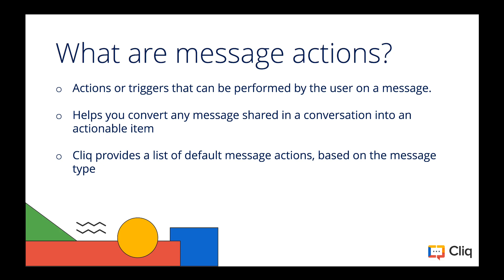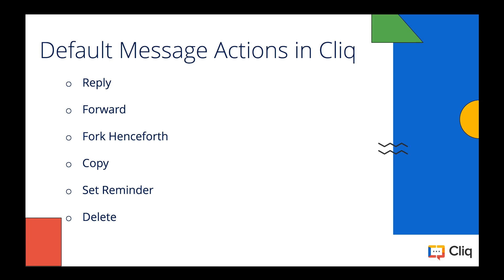So with that, let's get started. A message action in Cliq is just an action that you will perform on a message. They help in converting any messages shared in a conversation into an actionable item. Now Cliq provides a list of default message actions — let us take a look at the default actions that are available.